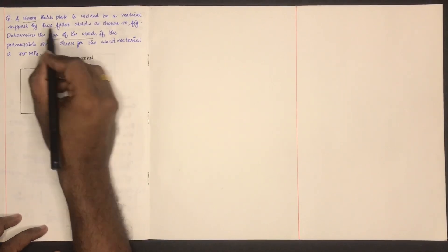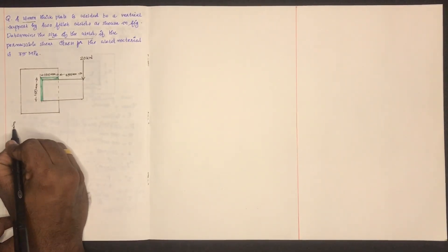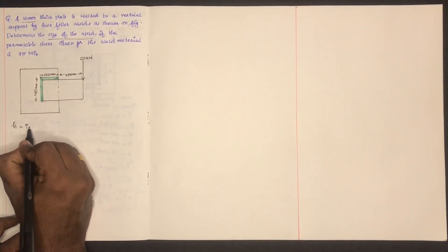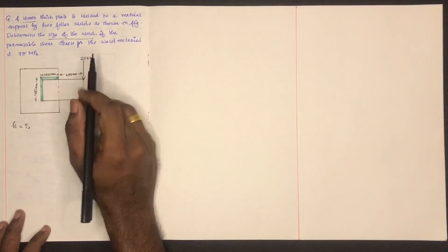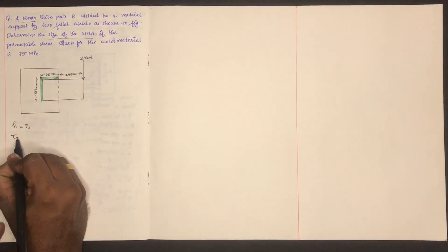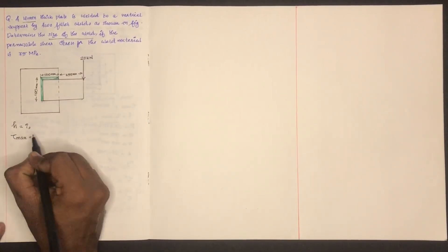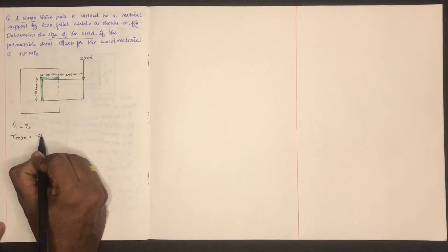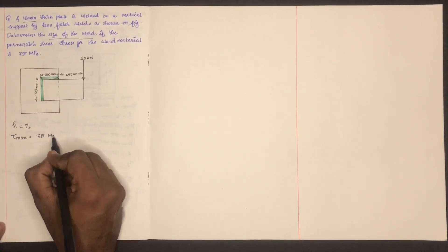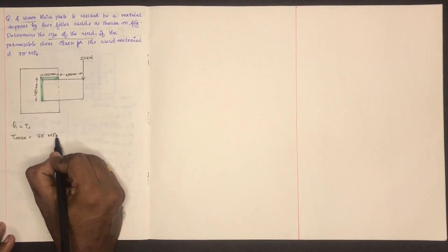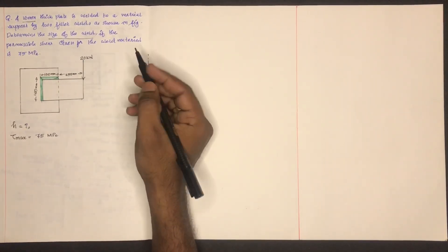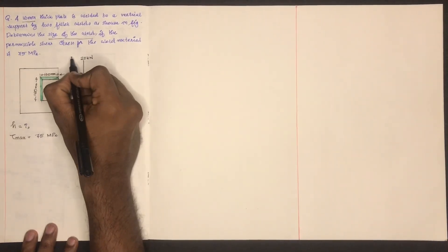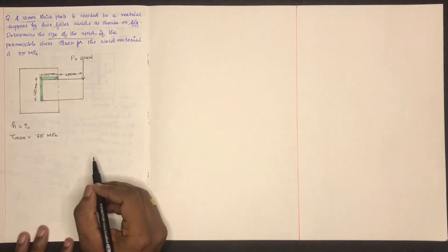The thickness of the plate — you have to find H. If the permissible shear stress for the material is 75 MPa, now we have to find the dimensions. P is equal to 20 kN.